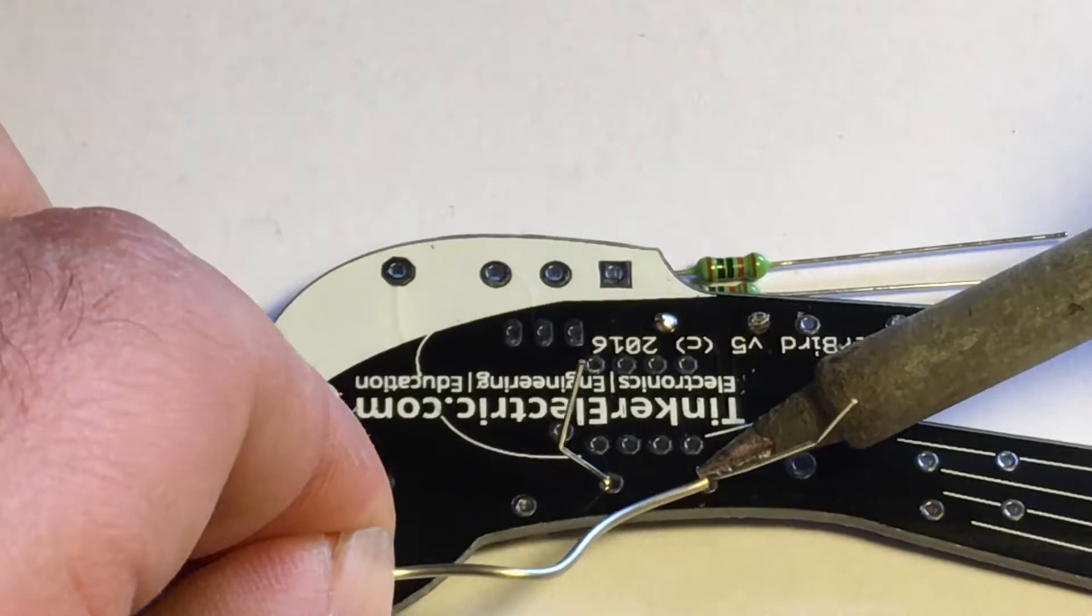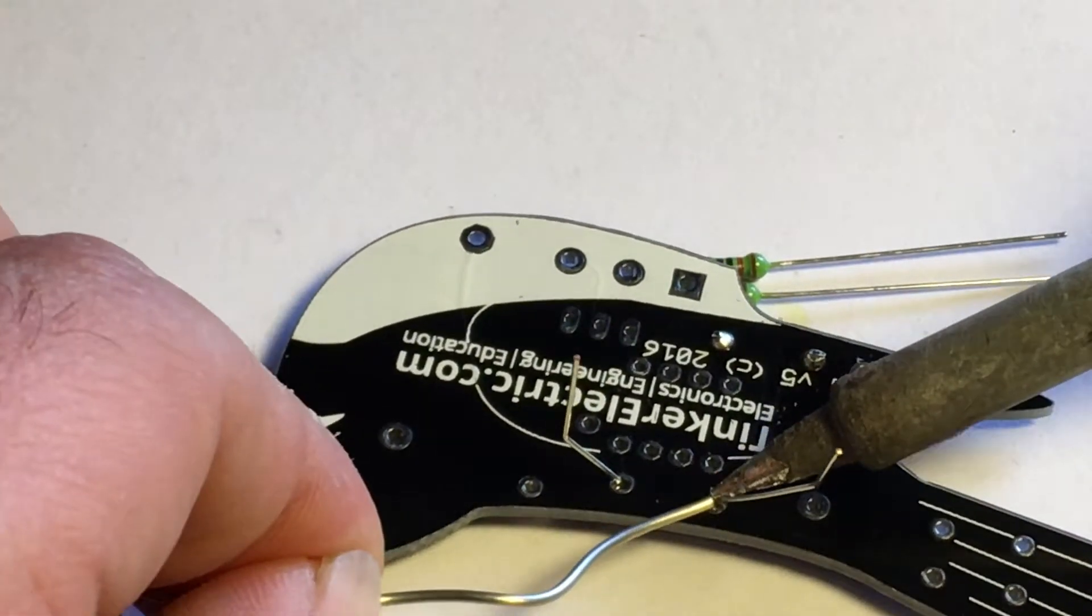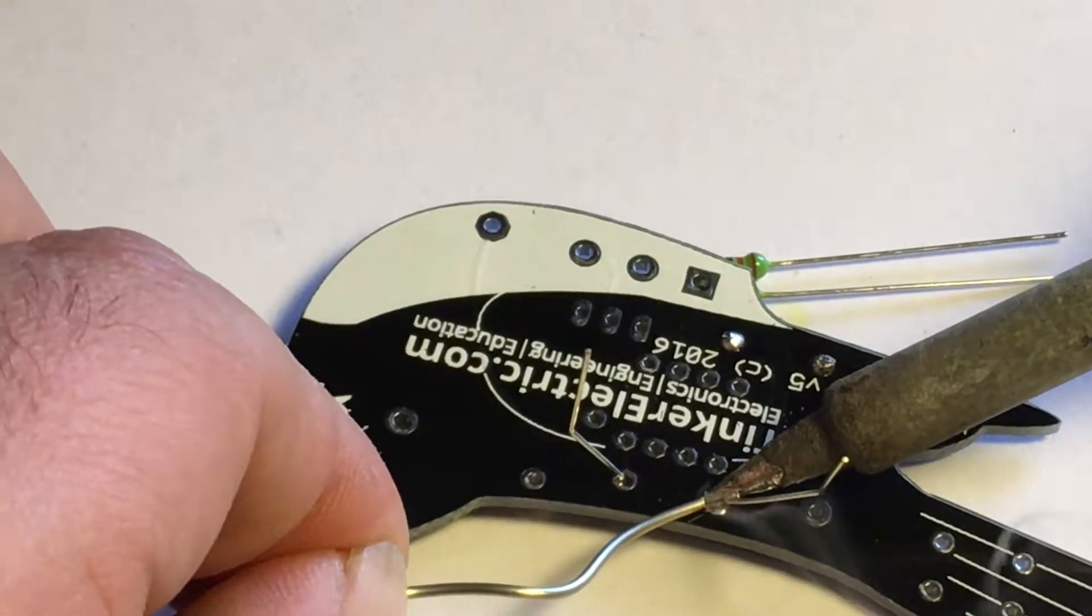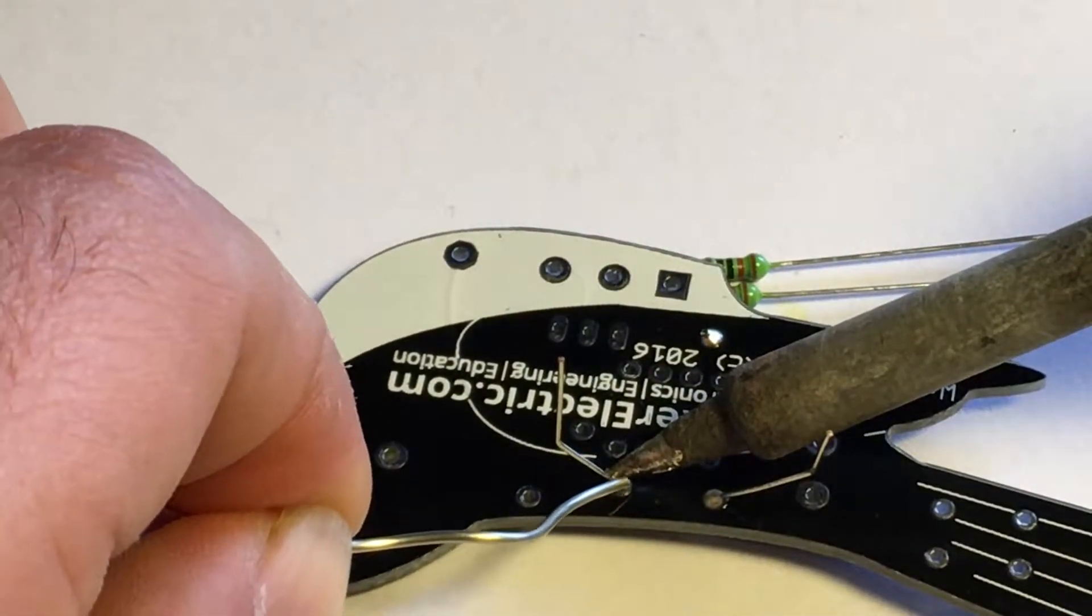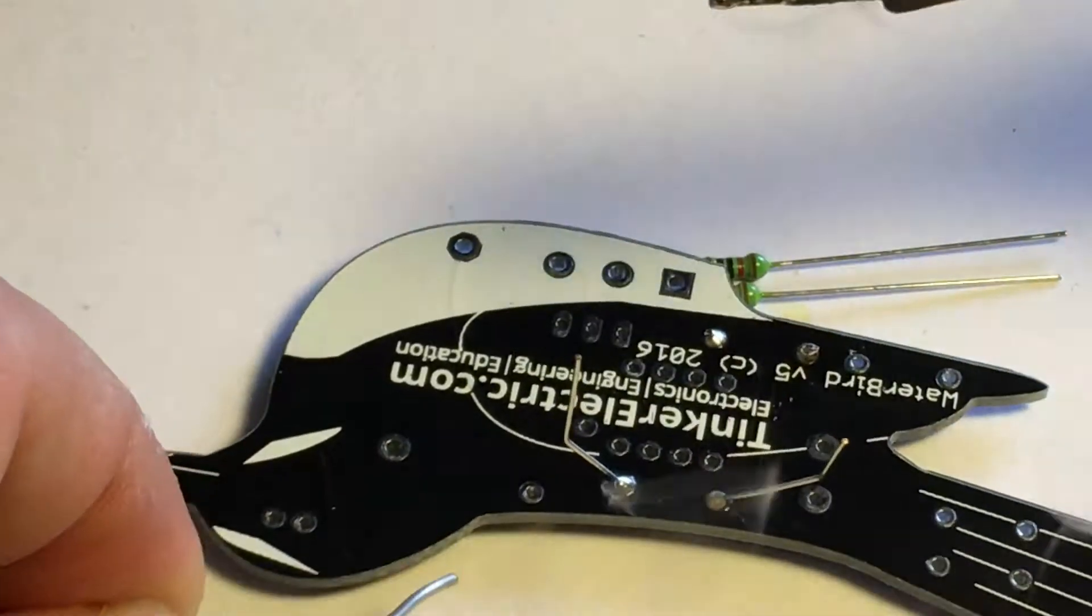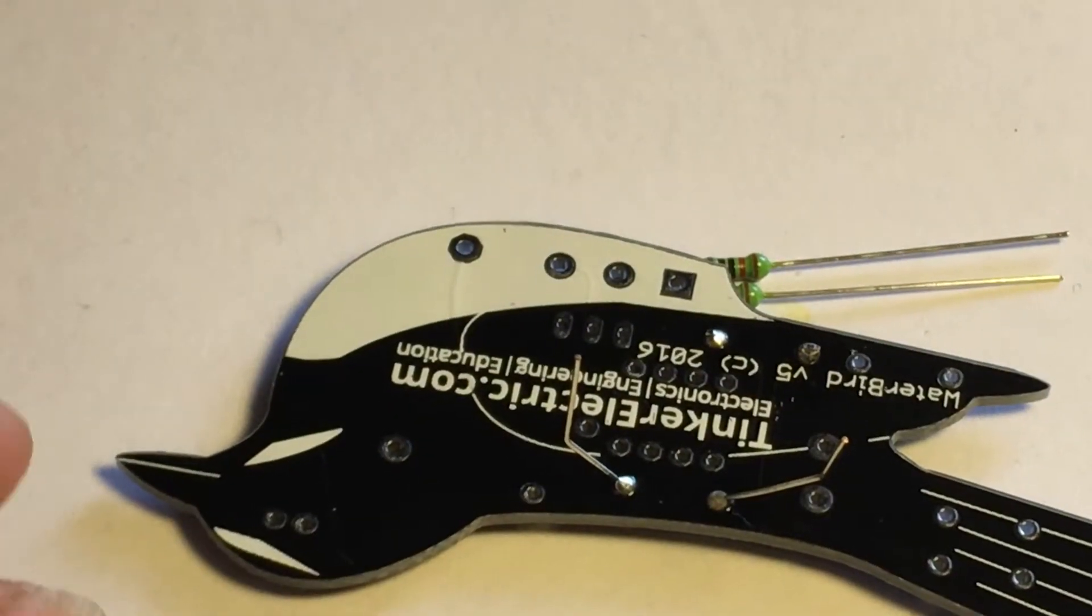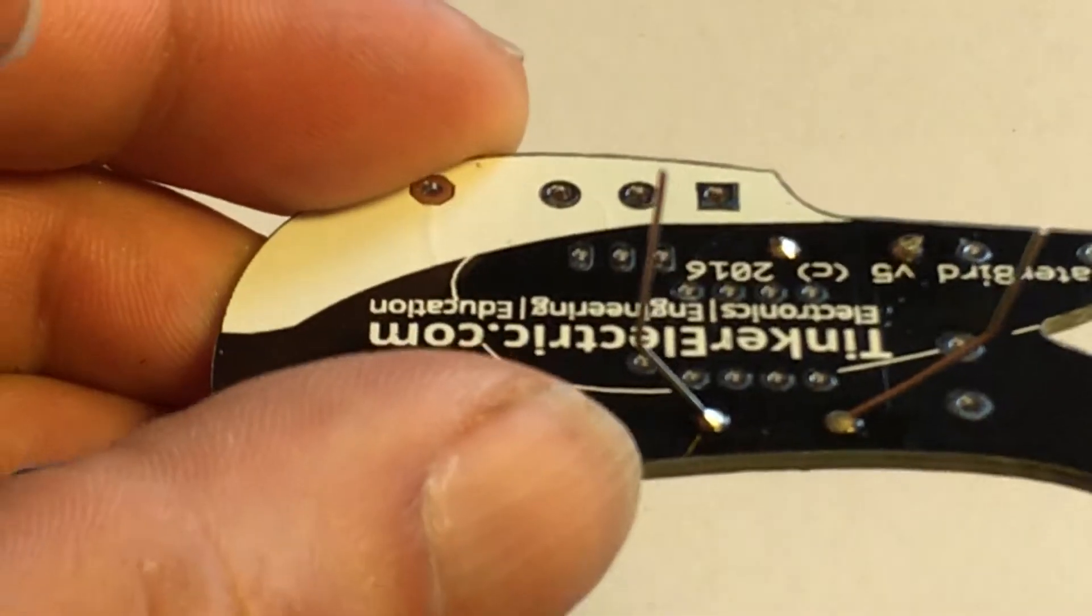Hold the iron on the pad and the leg to heat it up, put a little bit of solder in, and then take it out. It looks like that.